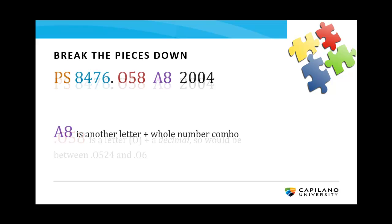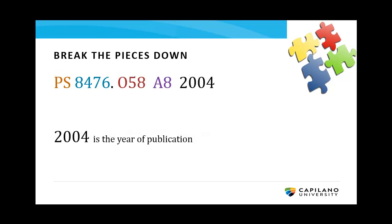The next piece switches back to being a letter and a whole number. It's important to know that not all call numbers include this piece, so don't worry if your call number is shorter than this one. The final number is the year the book was published, which is mostly important if there are multiple editions of the book and you need to read a particular one.